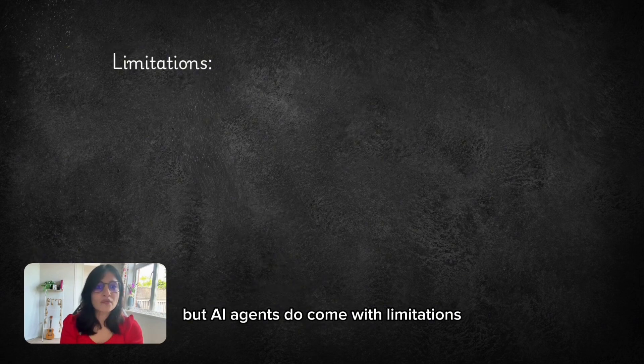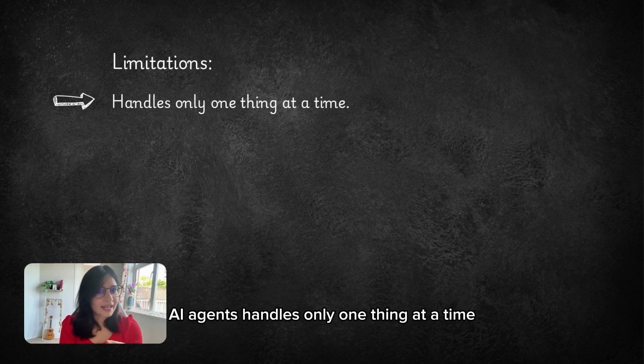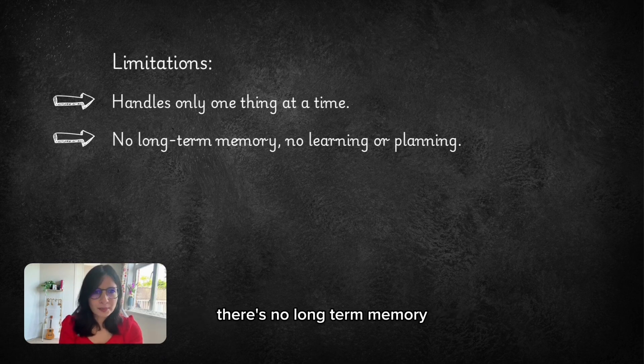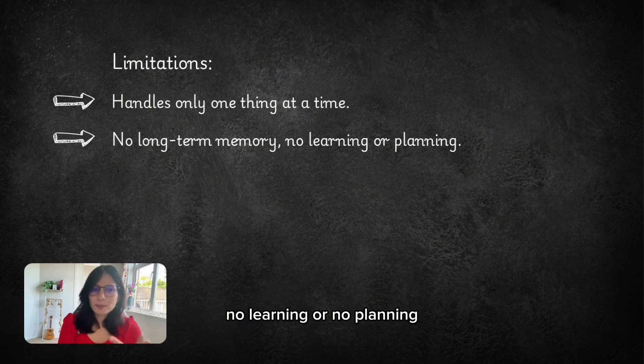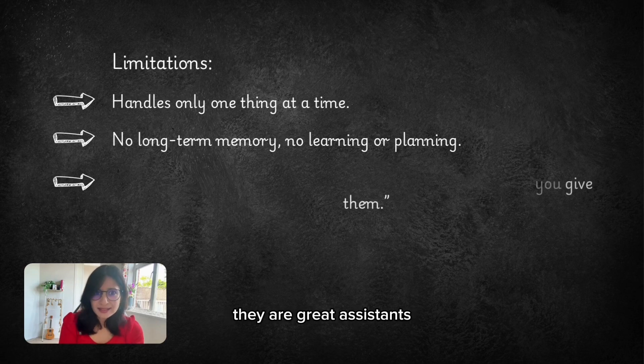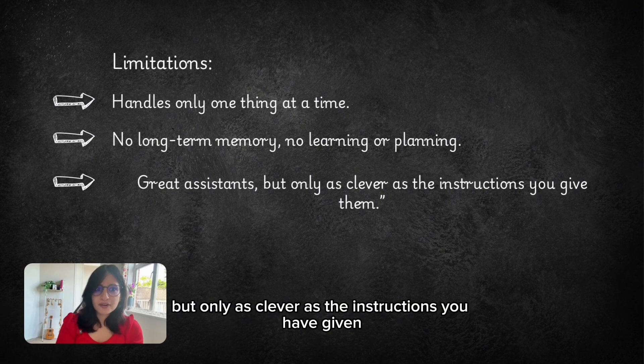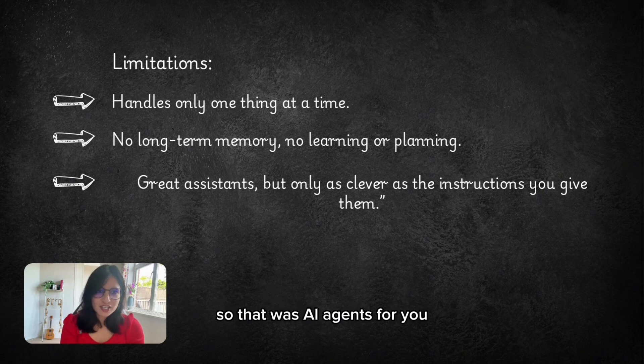But AI agents do come with limitations. AI agents handle only one thing at a time. There is no long-term memory, no learning or no planning. They are great assistants but only as clever as the instructions you have given. So that was AI agents for you.